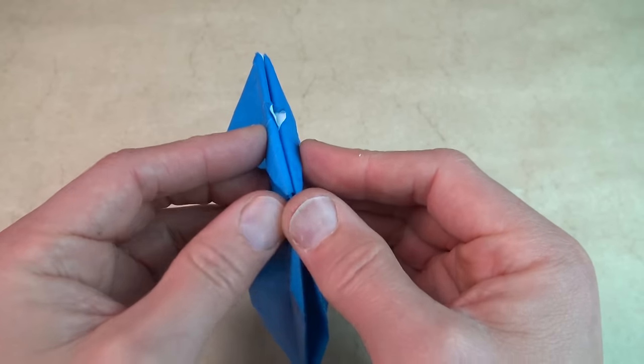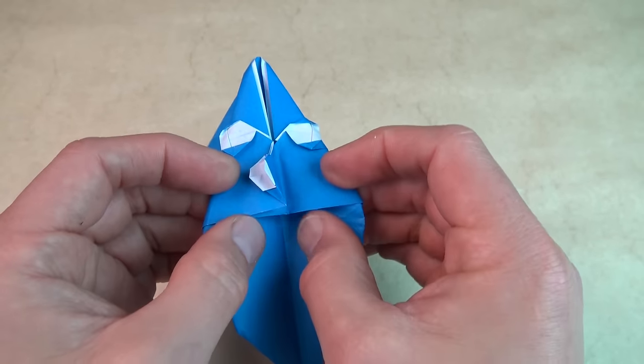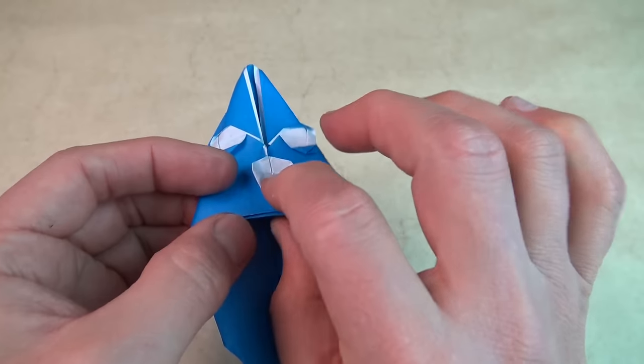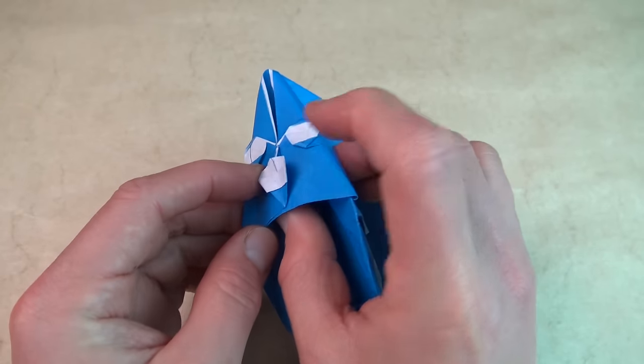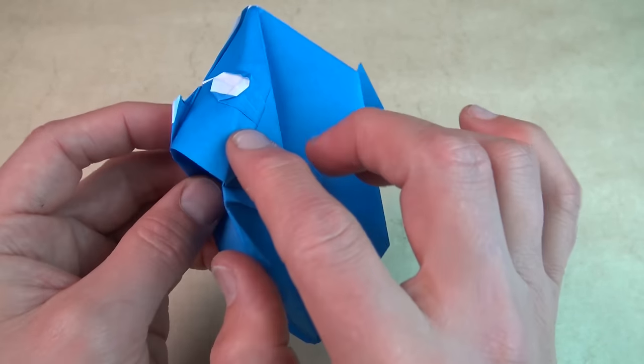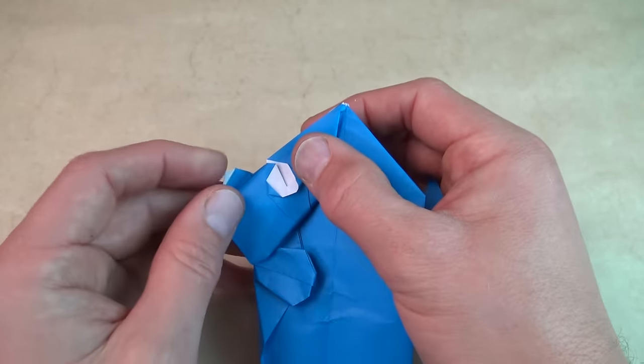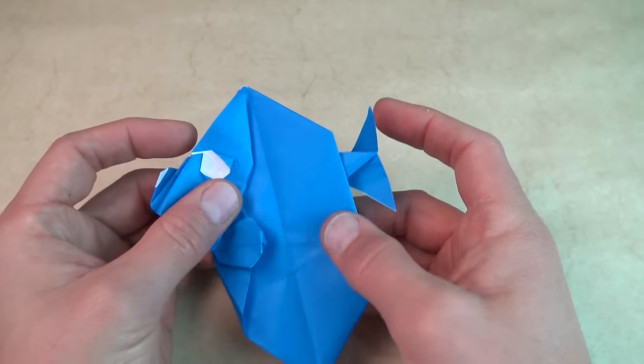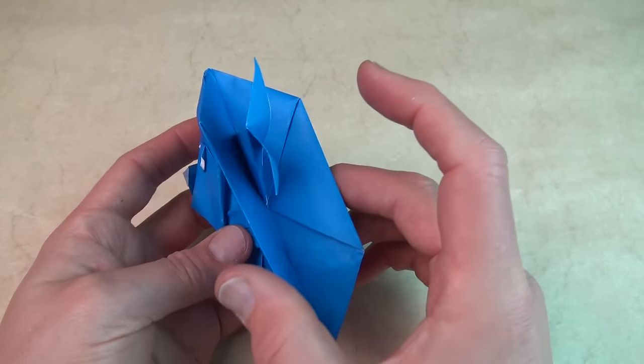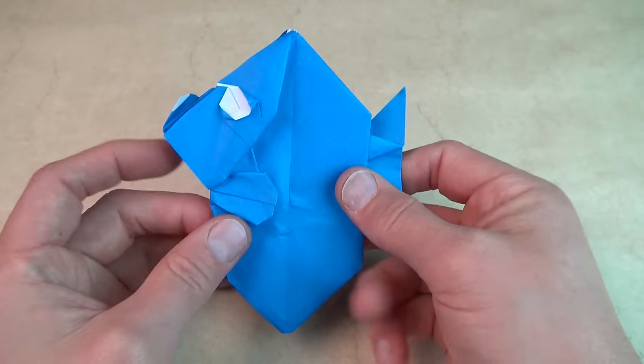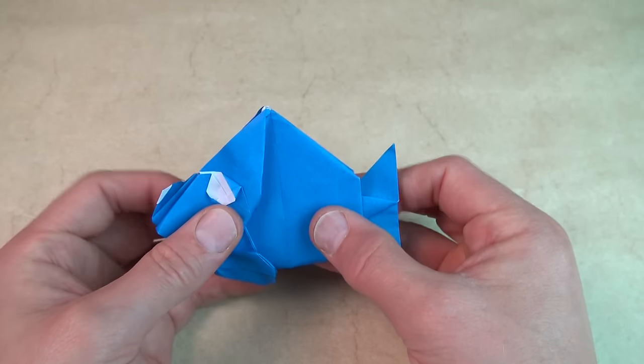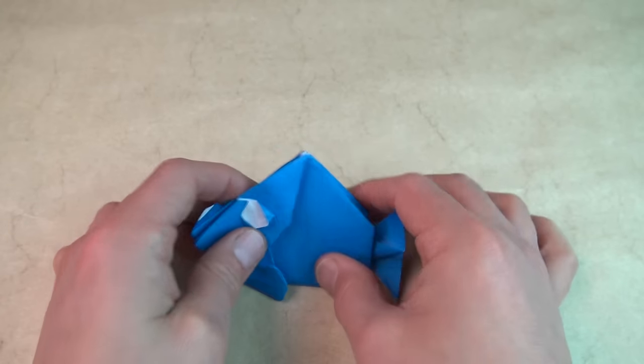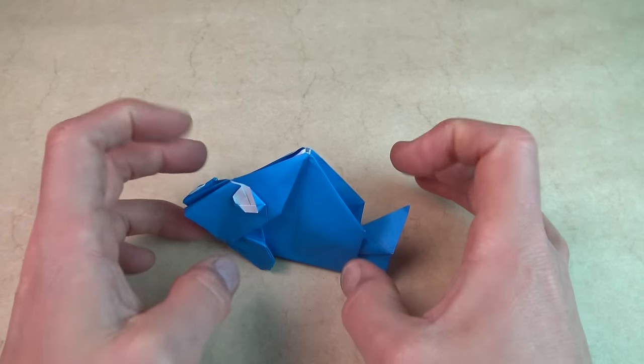And now open here. And holding right here we're going to pull this flap out as you squash. Like that. And now just fold this flap behind. And this flap can be used as a stand. Like that.